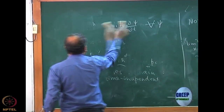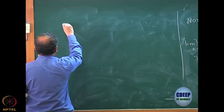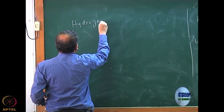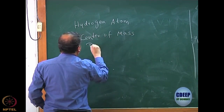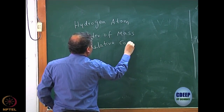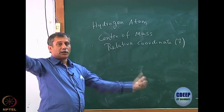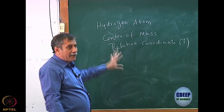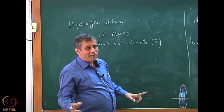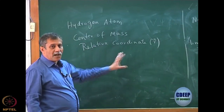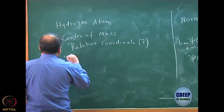For the hydrogen atom, we converted the two-particle problem into a single-particle problem using center of mass and relative coordinates. The center of mass gives only the kinetic energy part; the relative coordinate — R, theta, phi in three dimensions — represents the electron with respect to the nucleus. This gives three quantum numbers: N (principal), L, and M. N starts from 1; L goes from 0 to N−1; M goes from minus L to plus L in steps of 1.